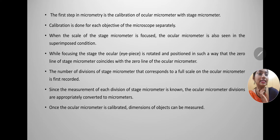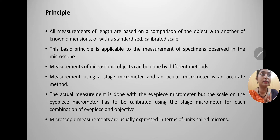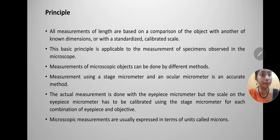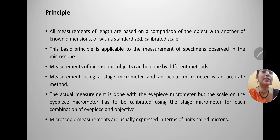Now let us understand the principle with the help of an image. All measurements of length are based on a comparison of the object with another of known dimension or with a standardized calibrated scale. This basic principle applies to measuring specimens in the microscope. Measurement using the stage micrometer and an ocular micrometer is an accurate method. The actual measurement is done with the eyepiece micrometer, but its scale must be calibrated using the stage micrometer for each combination of eyepiece and objective. Microscopic measurements are usually expressed in microns or micrometers.